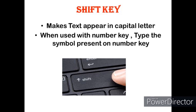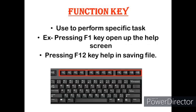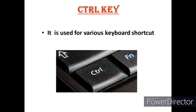The Shift key, when used with an alphabet key, makes the text capital. When used with a number key, it helps type the symbol shown on that key. Next is the Function key, which is used to perform specific tasks — for example, F1 opens the Help screen, and F12 helps in saving a file. These keys range from F1 to F12 and are present at the top of the keyboard. Finally, the Control key is used for various keyboard shortcuts. Thank you, kids — I hope you understood everything.